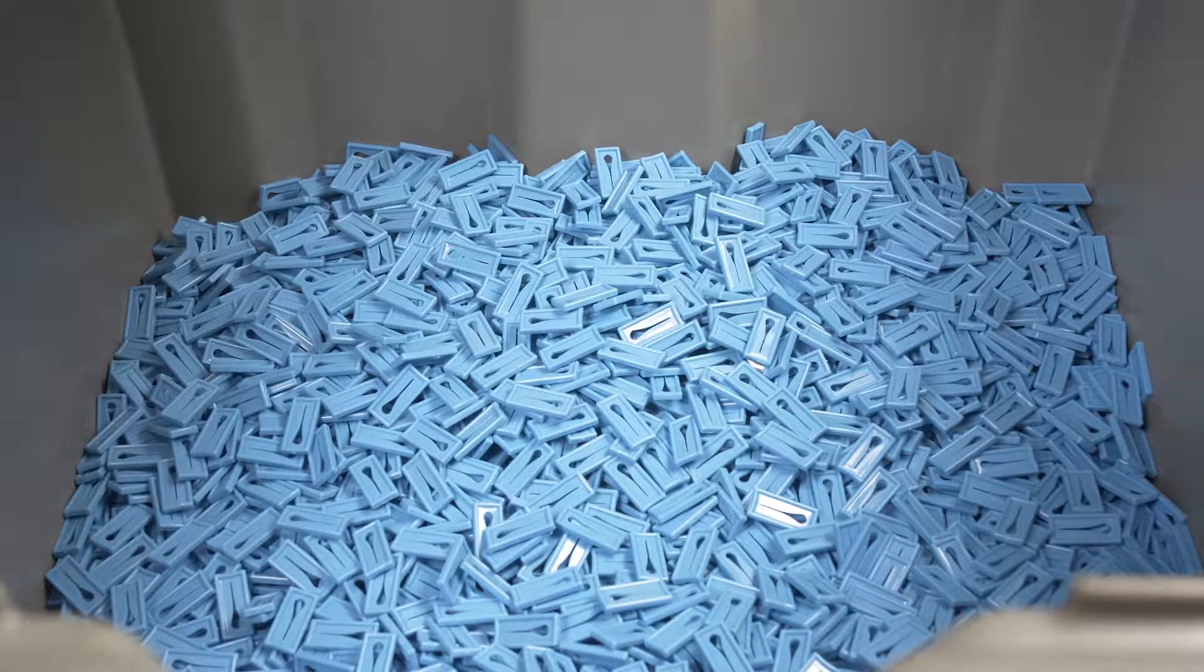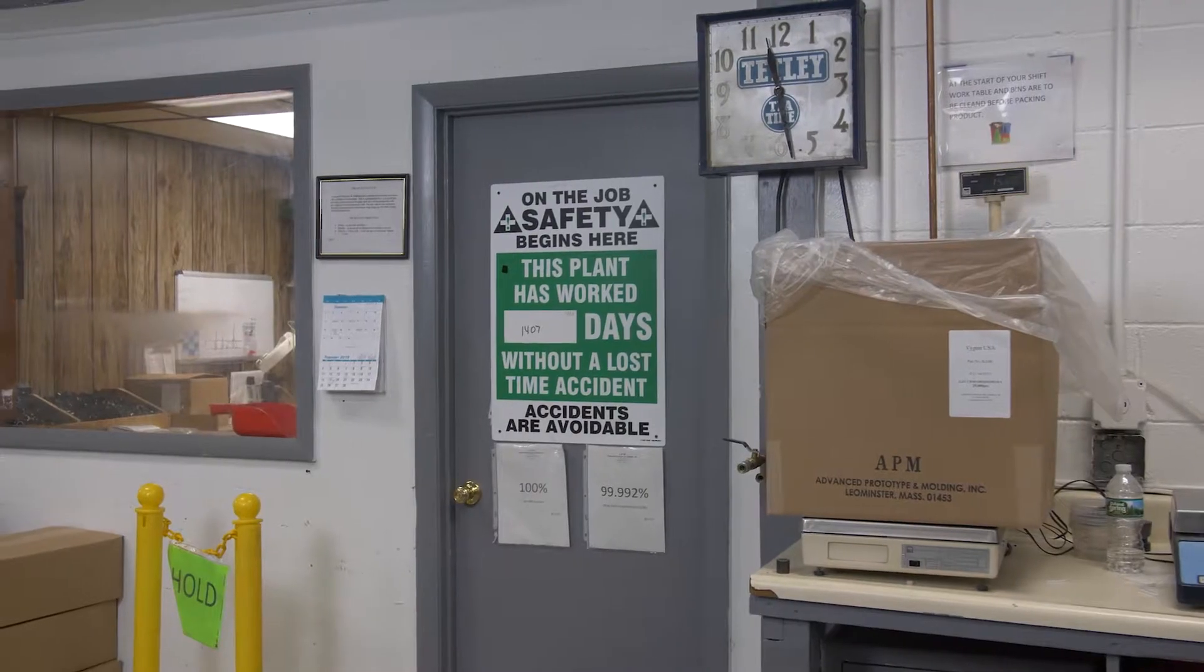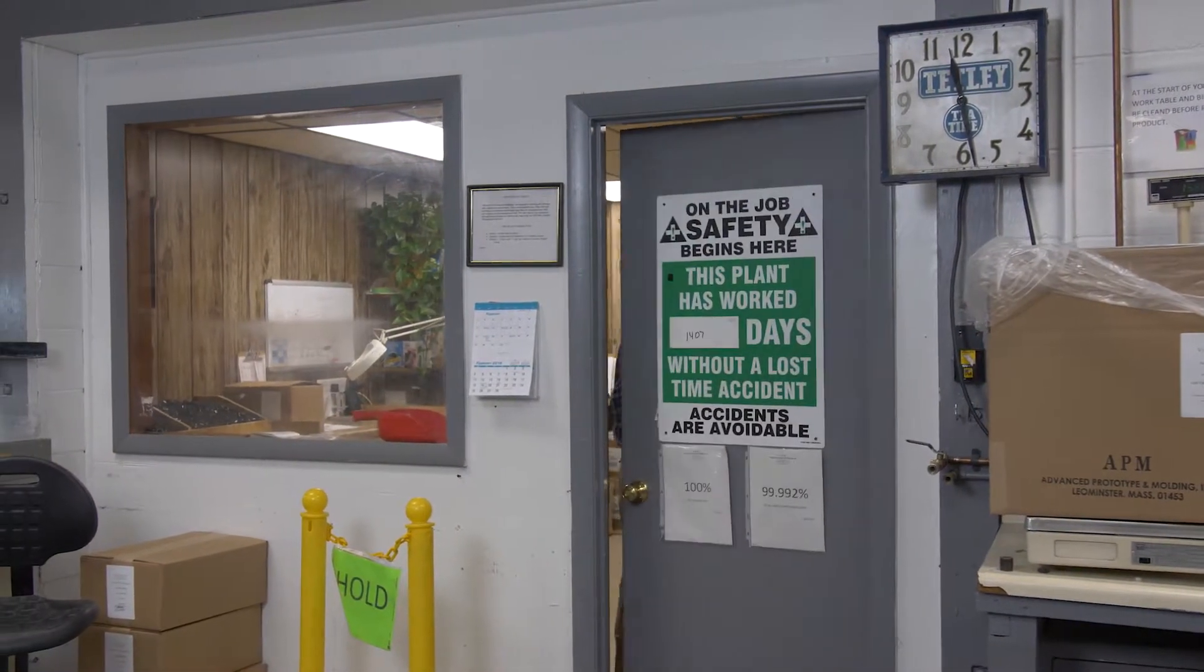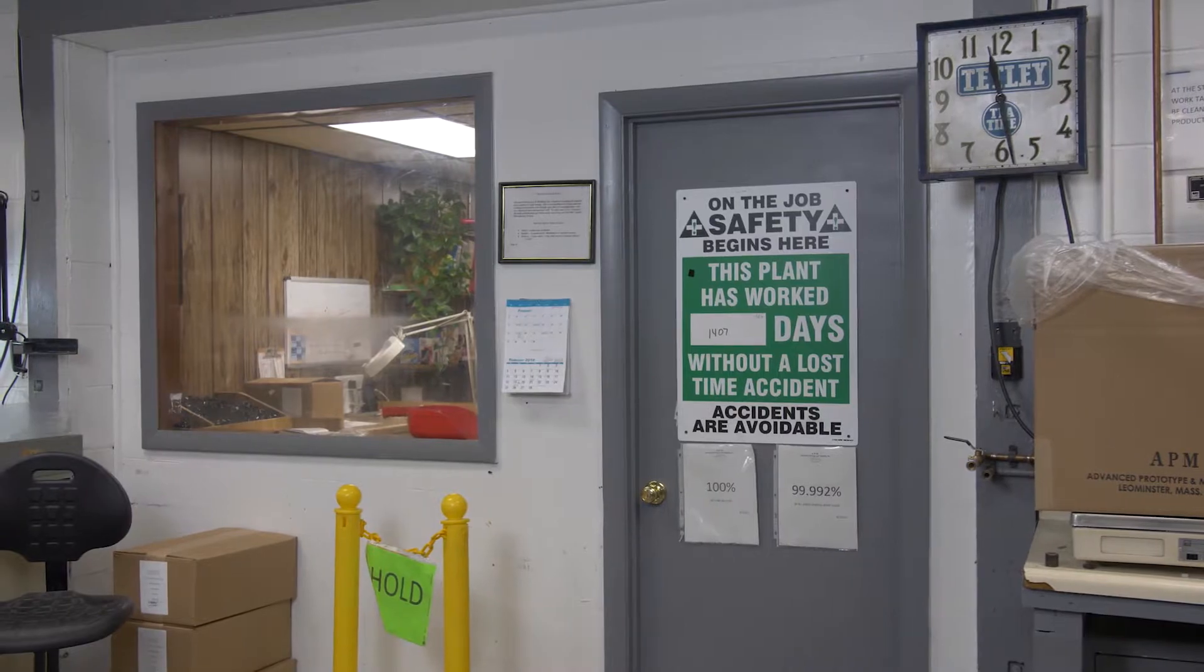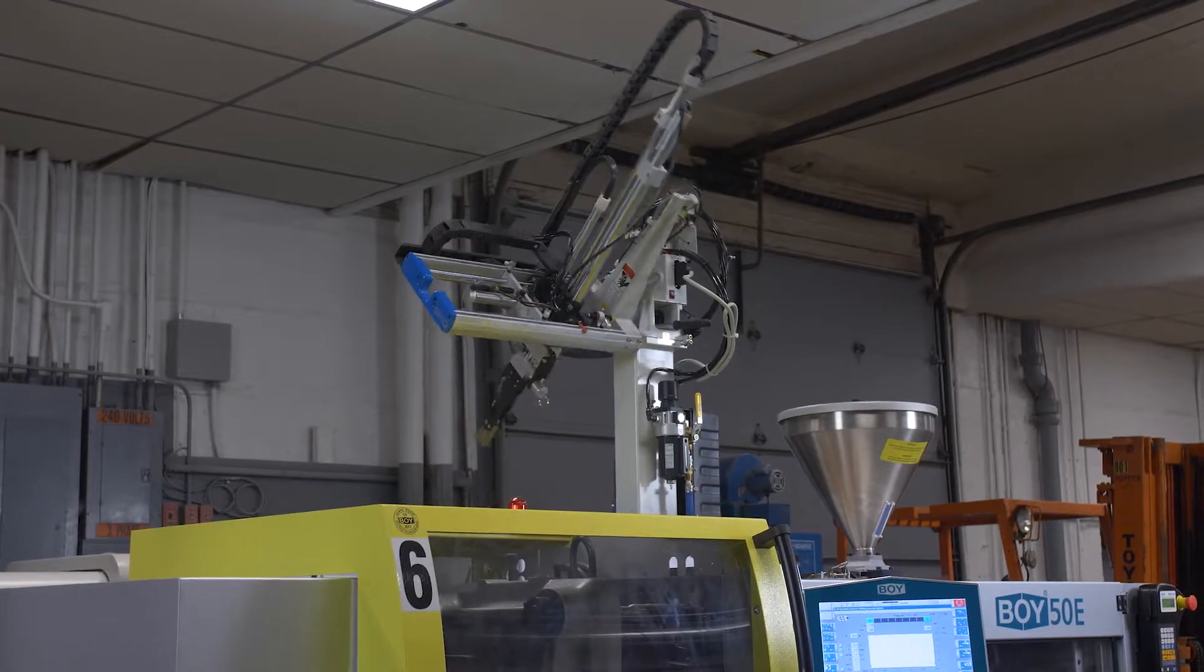We're an ISO 9001:2015 company. We just got our new certification in December of last year. We monitor our lost time accidents. We've never had one, but since we started monitoring, it's been 1,407 days. We also monitor our on-time delivery and finished good parts that go out the door. On-time delivery was at 100%. Our finished goods that went out the door as good product was 99.96%.